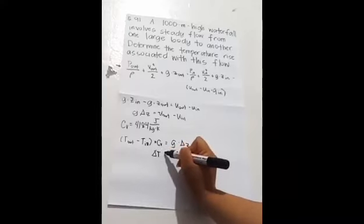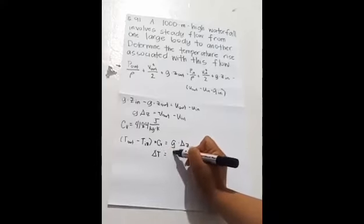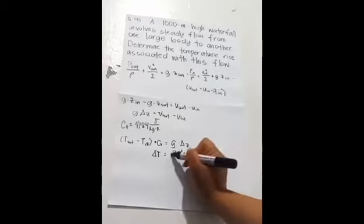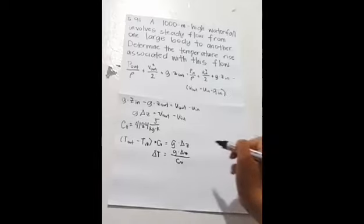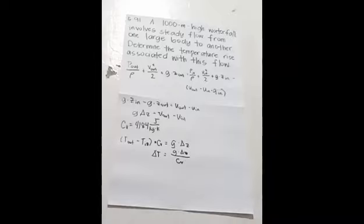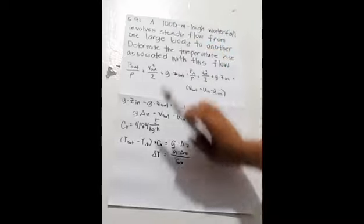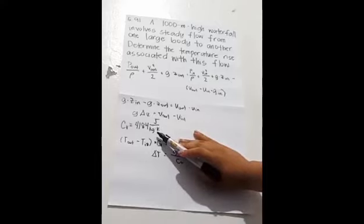Next is change of T equals G times change of Z over C. So we just have to input the given numbers, which is the 1,000 meters, the 4,184, and the value of G.